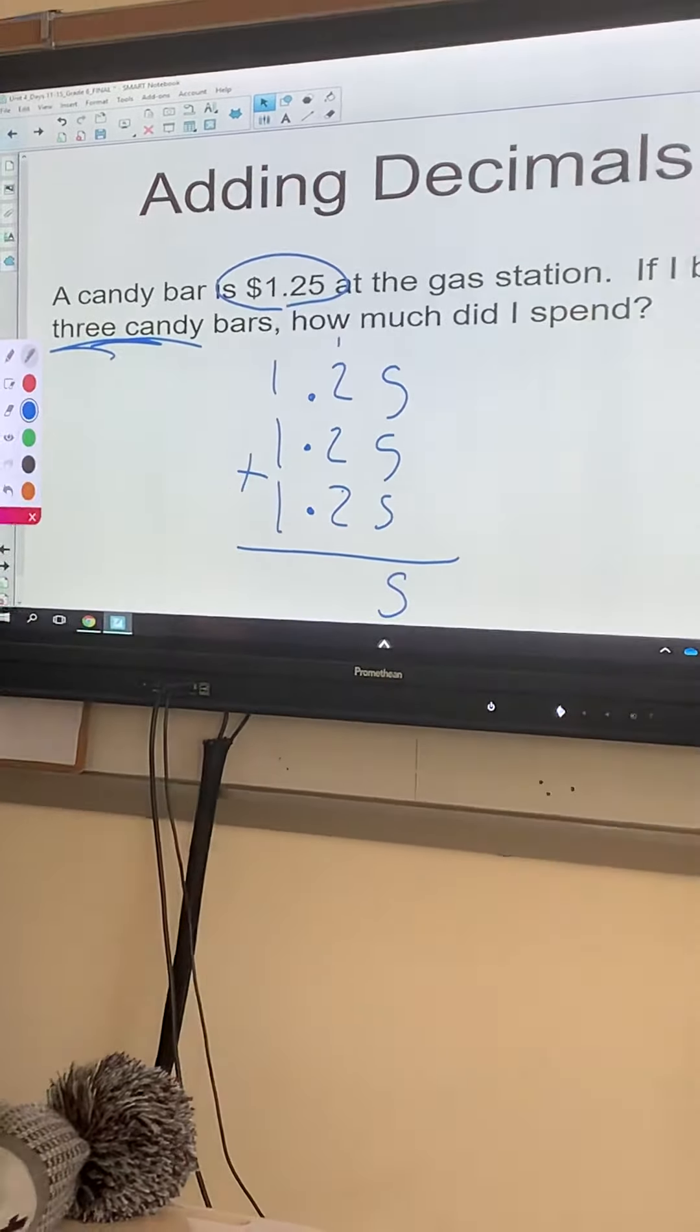Now we have Mr. Johnson entering his dogs in a dog show: Jax, Sparky, and Harley. This is an important problem because not all of these have the same number of digits after the decimal.